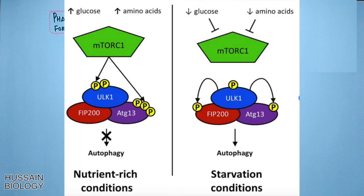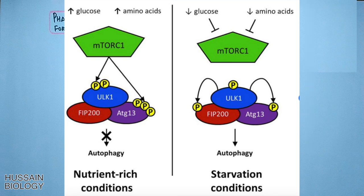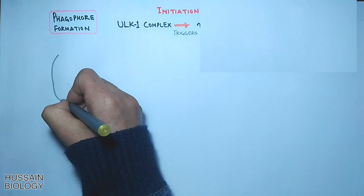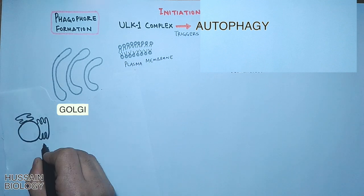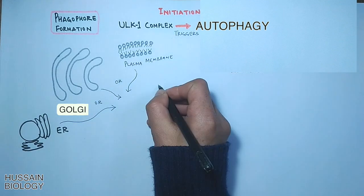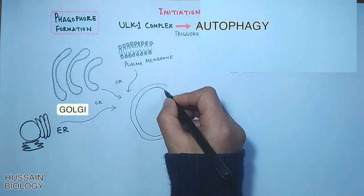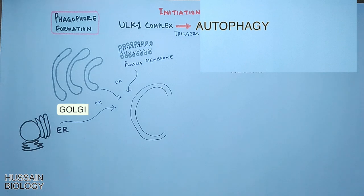But when the nutrient level falls extensively, the mTOR pathway is inhibited. Under starvation conditions, ULK1 phosphorylates both FIP200 and ATG13, resulting in the activation of downstream autophagy effector proteins, thus leading to autophagy. When the signal is mediated, the cytomembrane is selected from the Golgi, plasma membrane, or endoplasmic reticulum, and from this the phagophore is made.